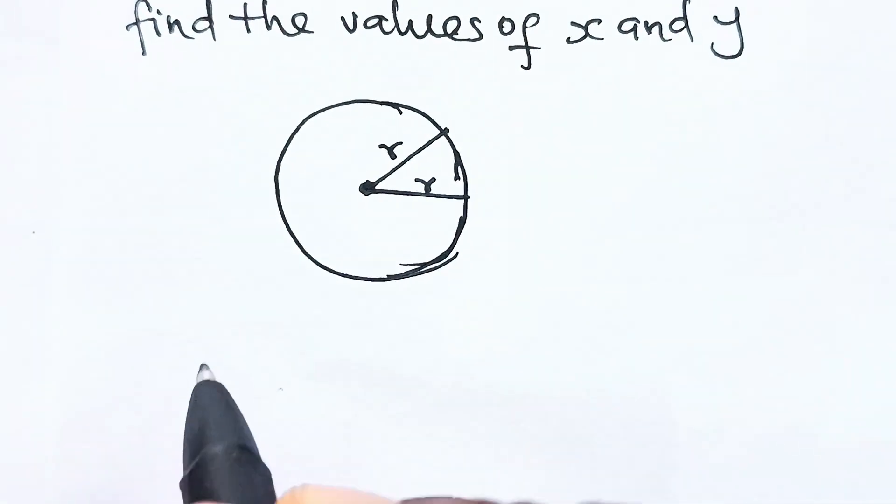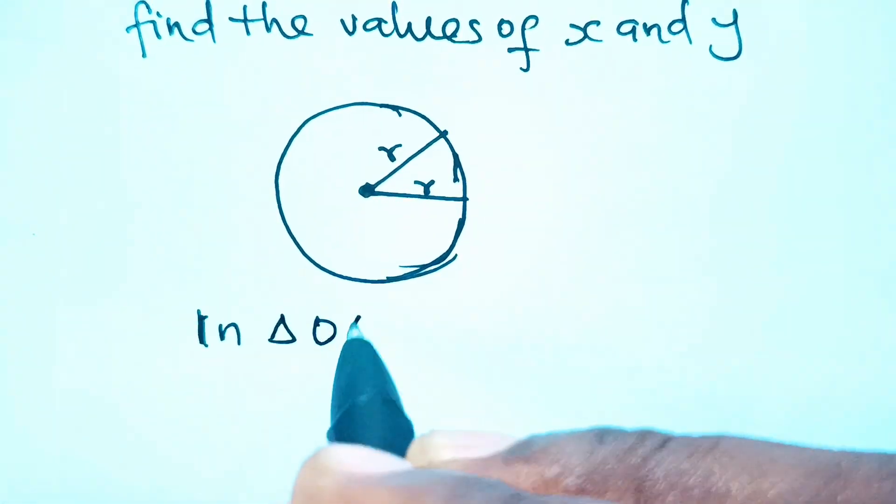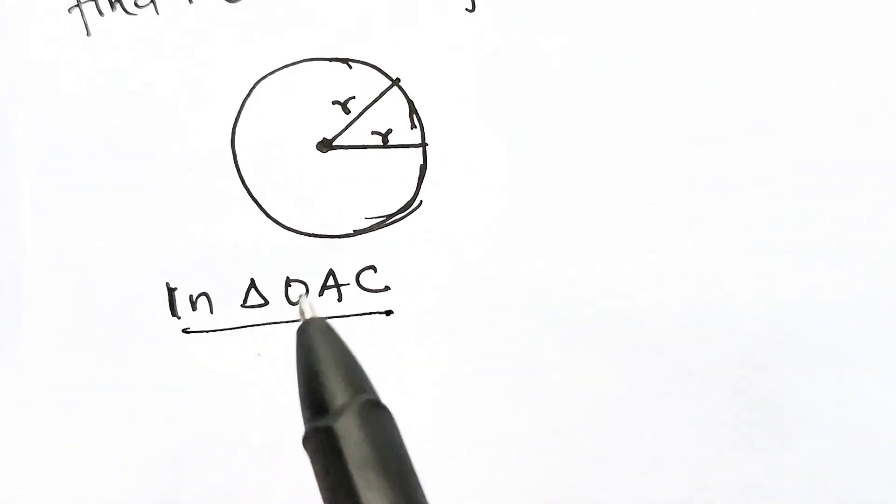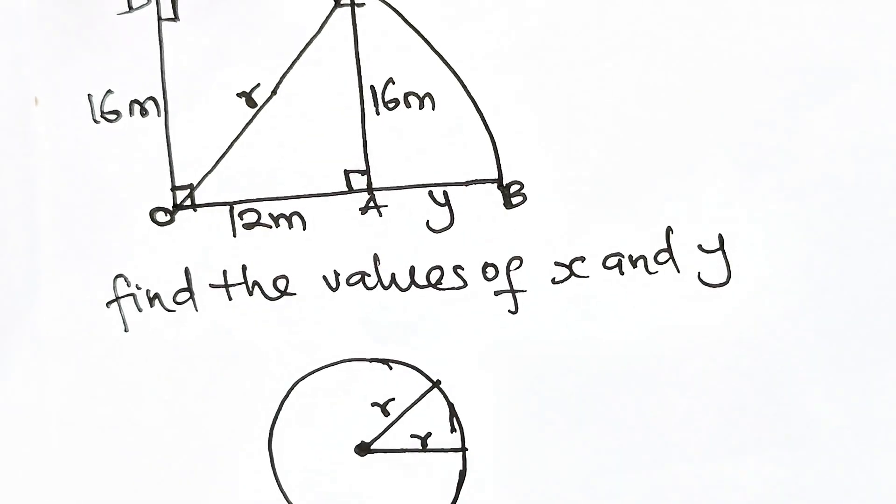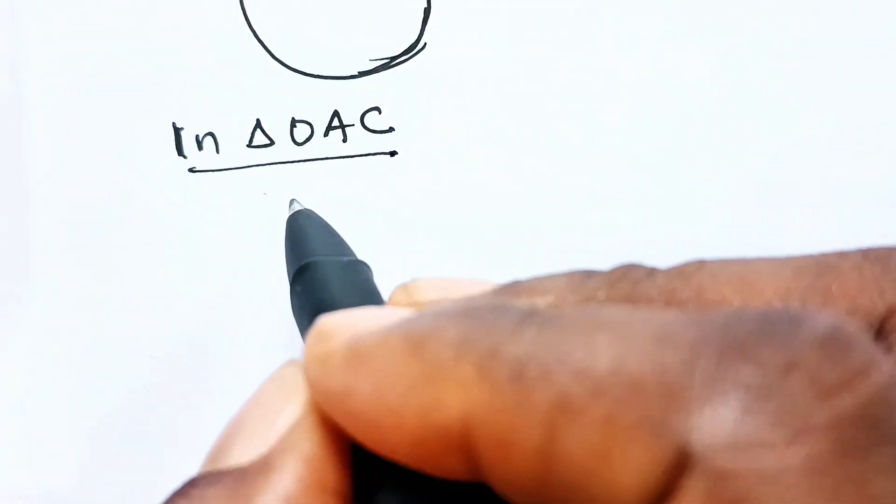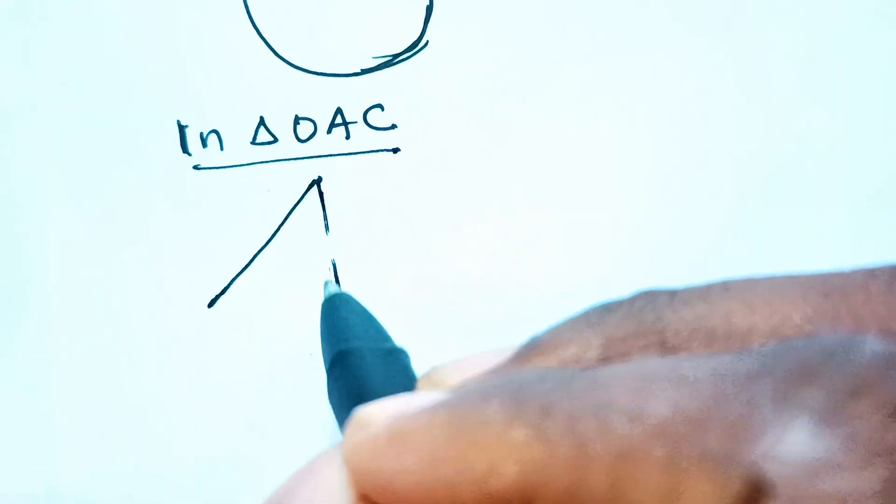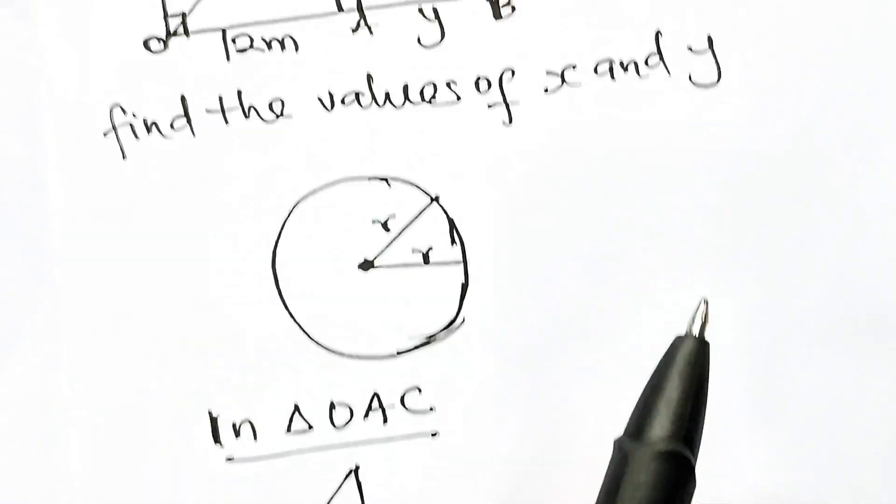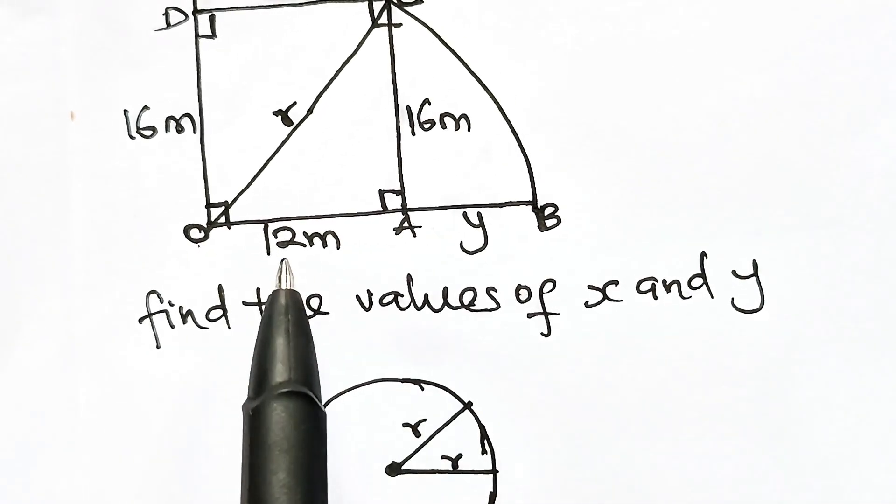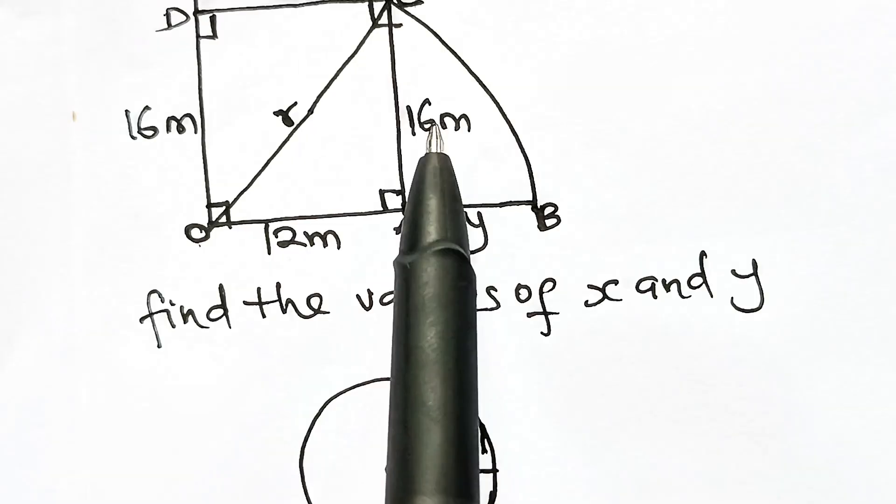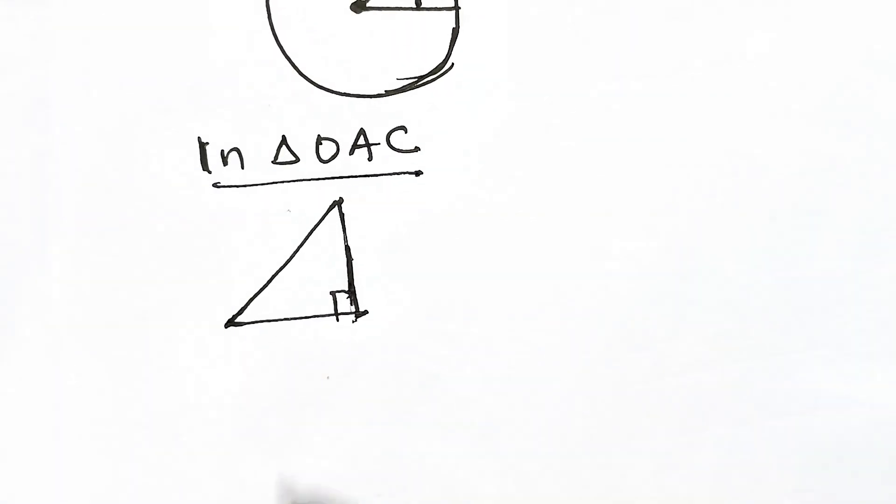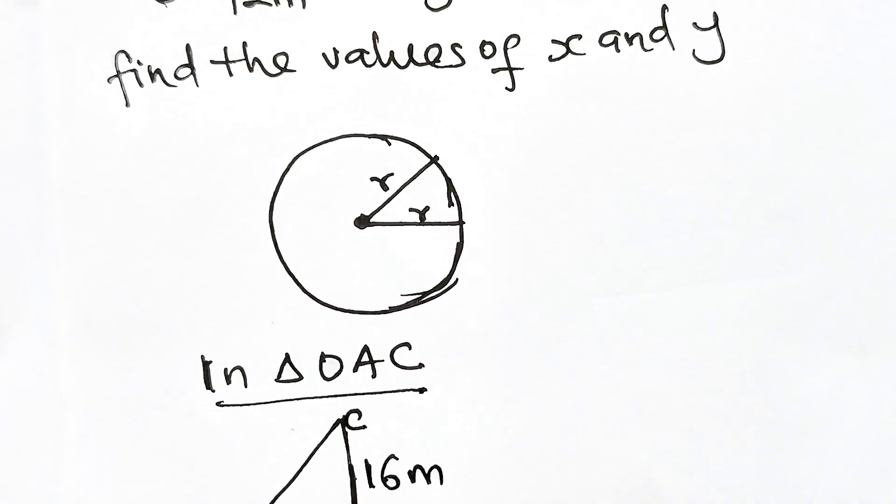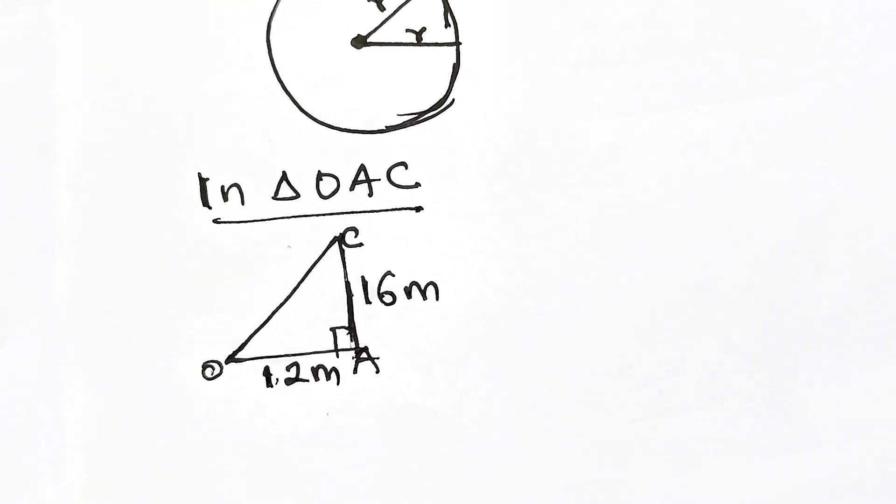In triangle OAC, we can see that OAC is a right angle triangle. Let's draw it out. From the diagram, OA is 12 meters and CA is 16 meters. Now we can find OC, which happens to be the radius of this semicircle.